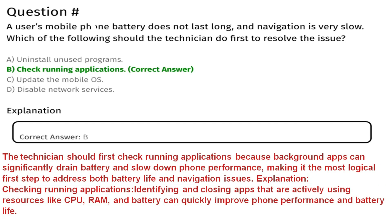Next question: A user's mobile phone battery does not last long and navigation is very slow. Which of the following should the technician do first to resolve the issue? Option A is uninstall unused programs, Option B is check running applications, Option C is update the mobile OS, Option D is disable network services. The correct answer is Option B, check running applications, as the technician should first identify what is currently consuming battery and processing resources.